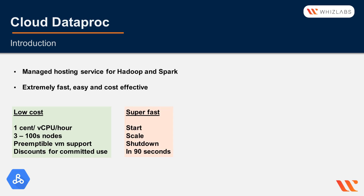It's super fast. Typically it can take from 5 to 30 minutes to create a Spark or Hadoop cluster on-prem. Cloud Dataproc clusters are quick to start, scale, and shut down, with each of these operations taking 90 seconds or less on average.